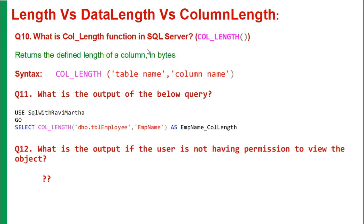The column length function in SQL Server returns the length of a column in bytes. It takes two arguments: one is the table name and the other is the column name. If the user does not have permission to view the object, or if the table or column is not present, or the column name, table name, or database name is given wrong, it will just return null.